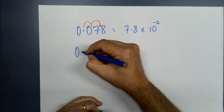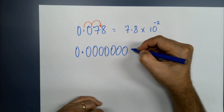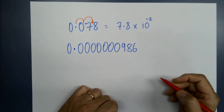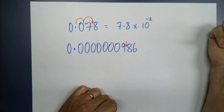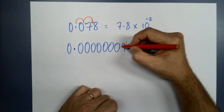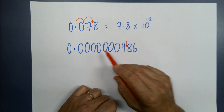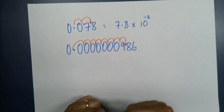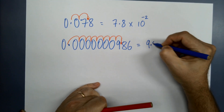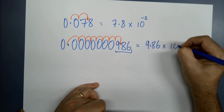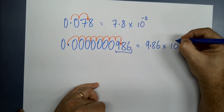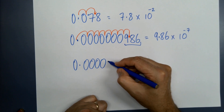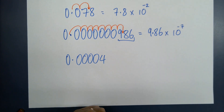What if I've got 0.000000986? Where does my decimal point need to end up? It needs to end up after the 9, giving 9.86. How many jumps? One, two, three, four, five, six, seven, eight. So that's 9.86 times ten — and because this is a really really small number, we put the negative: 9.86 times ten to the negative eight.